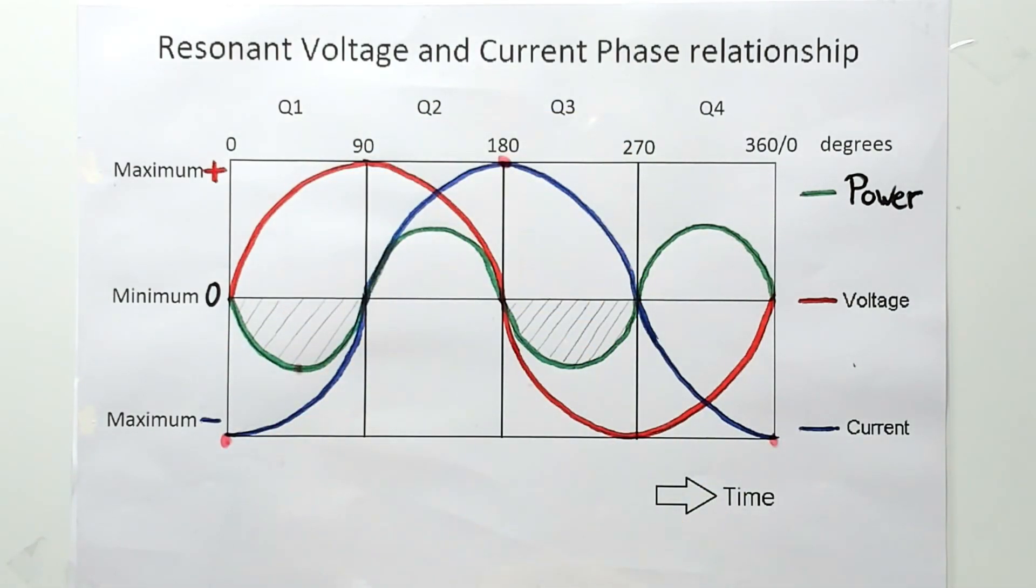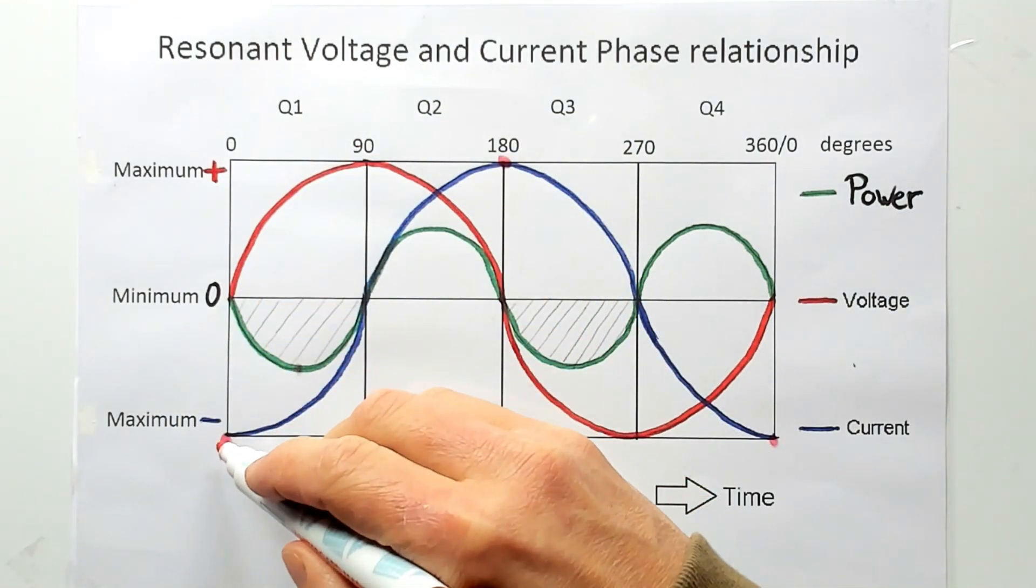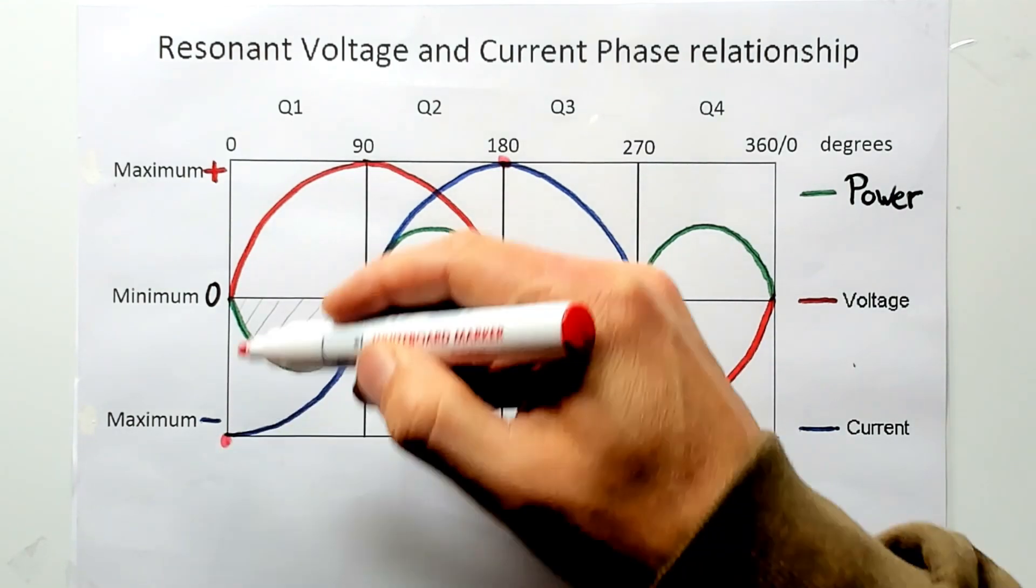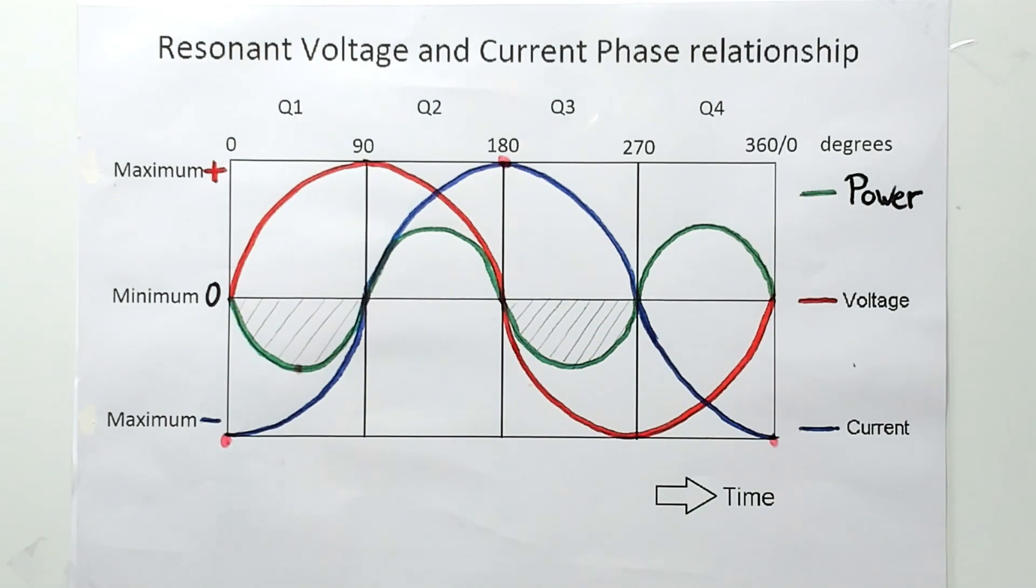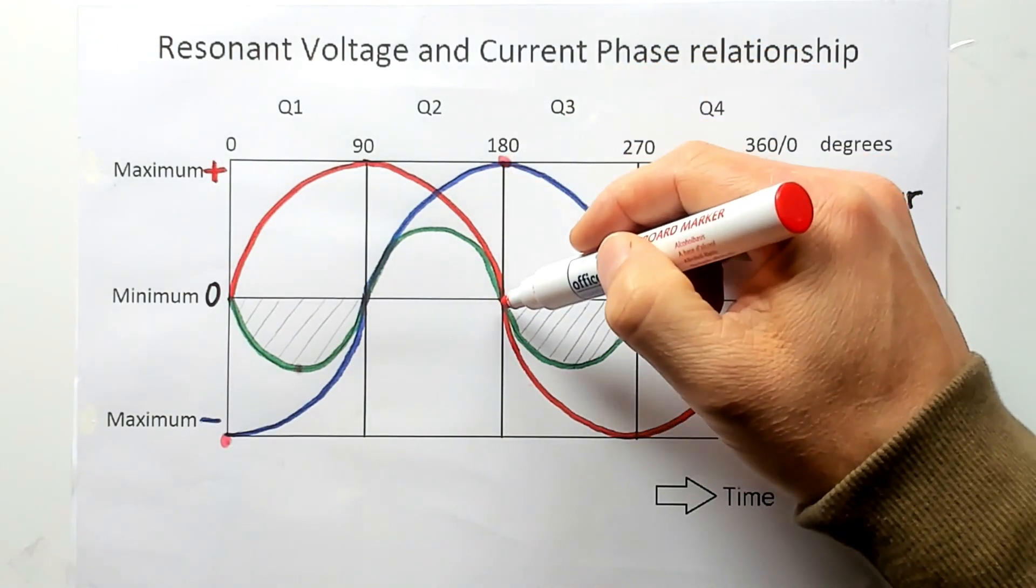So I intend to amplify that maximum current. At this point in time there is no voltage here. And here it's the same. There is no voltage.